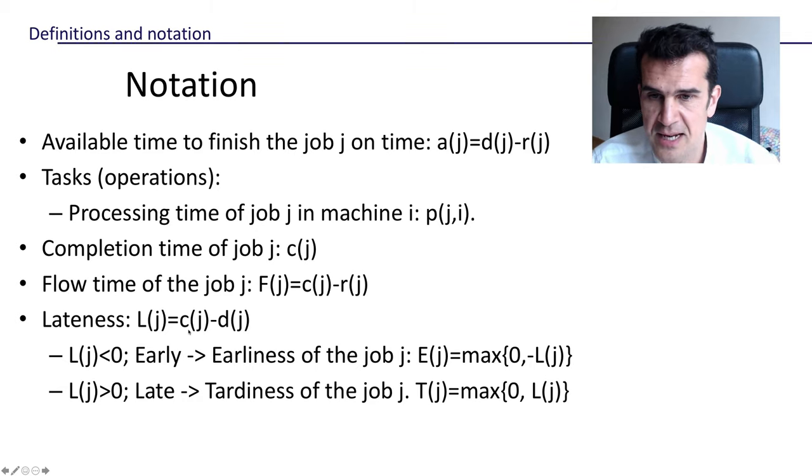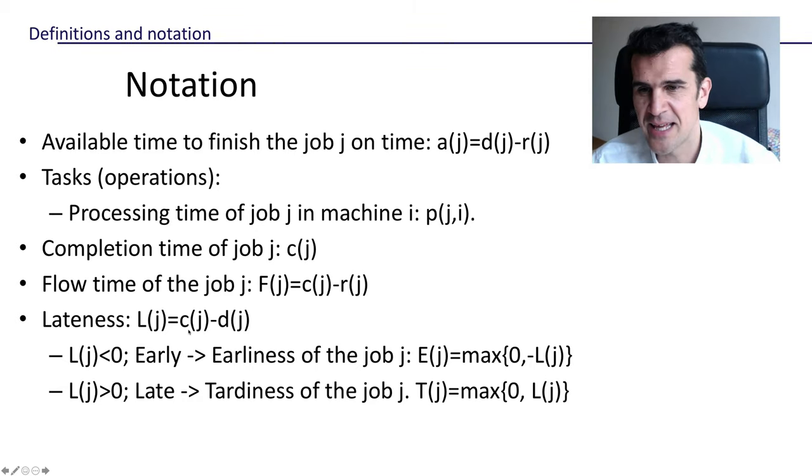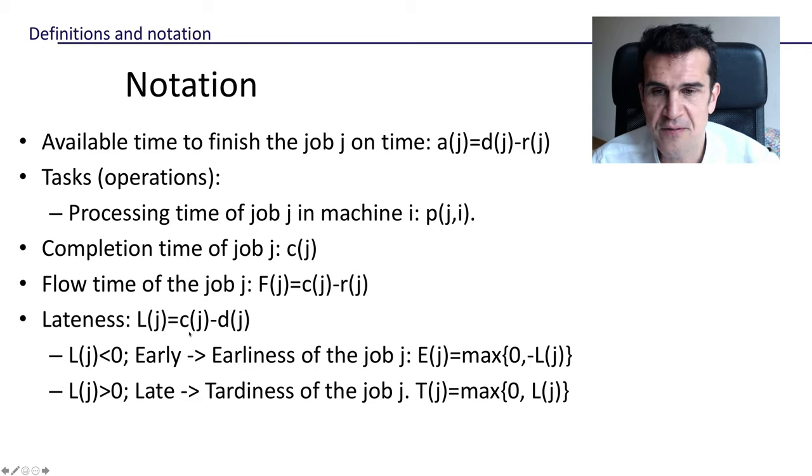And finally, the last one, keep it up guys. We're going to define the lateness of a job as the difference between the completion time for that job minus the due date. So basically, if we manage to complete a job, to finish a job before its due date, this magnitude, the lateness, will be negative. Because the time at which the job is completed, which is C(j), will be less, will be smaller than the due date.